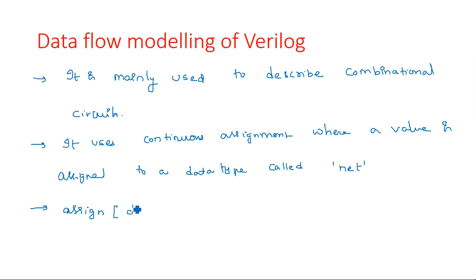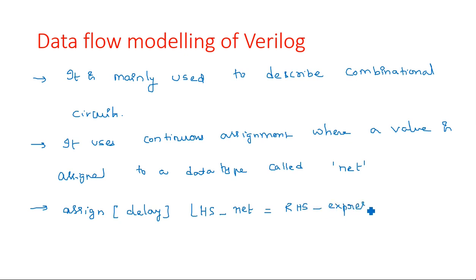The syntax is: assign, with some optional delay — for example, after two nanoseconds or three nanoseconds — then LHS net is equal to RHS expression. So the generic syntax for writing a data flow line is: assign, with an optional delay, LHS net value equals RHS expression.